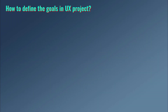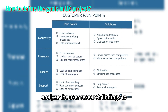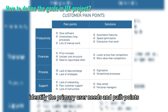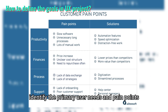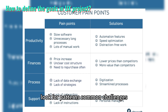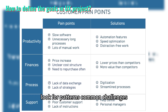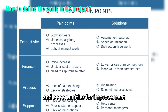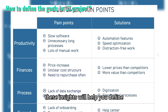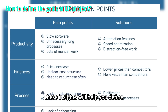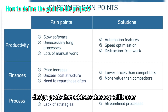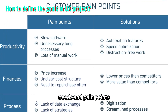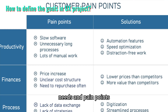Step three: analyze user needs and pain points. Analyze the user research findings to identify the primary user needs and pain points. Look for patterns, common challenges, and opportunities for improvement. These insights will help you define design goals that address these specific user needs and pain points.